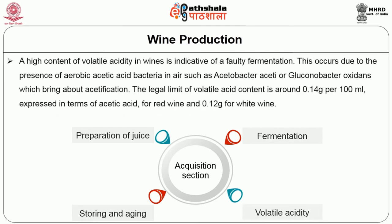Volatile acidity: a high content of volatile acidity in wines is indicative of faulty fermentation. This occurs due to the presence of aerobic acetic acid bacteria such as Acetobacter aceti or Gluconobacter oxidans which bring about acidification. The legal limit of volatile acid content is around 0.14 gram per 100 ml expressed in terms of acetic acid for red wine and 0.12 gram for white wine.